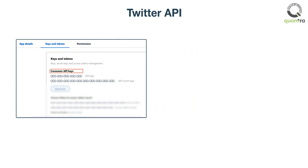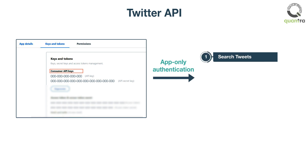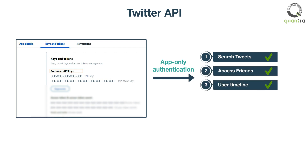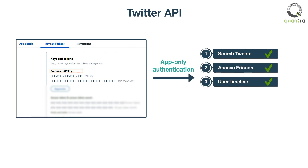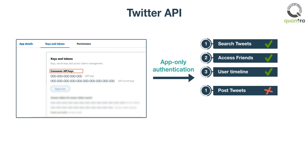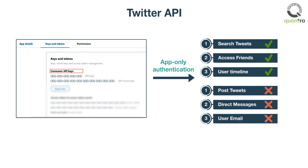The consumer API keys provide app-only authentication for your request. With this authentication, you can search tweets, access friends, and pull user timeline. But you cannot post tweets, access direct messages, and access user-specific information such as their email address.